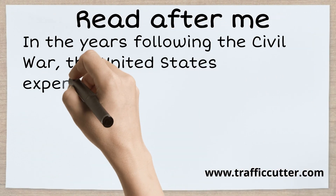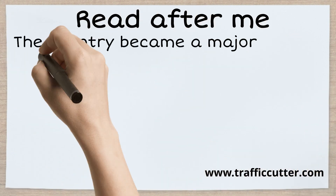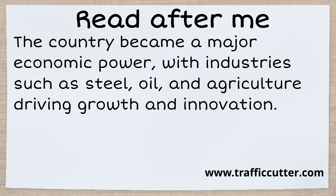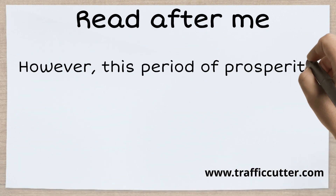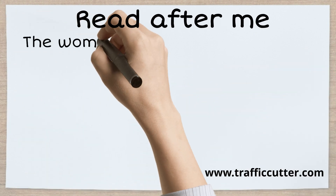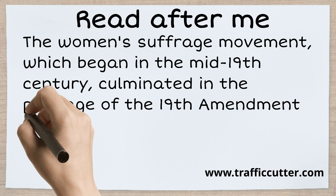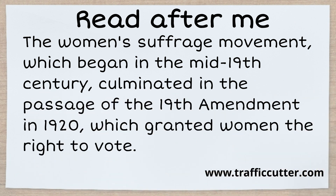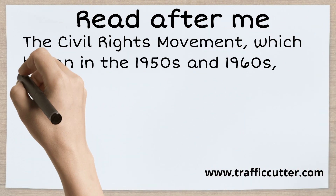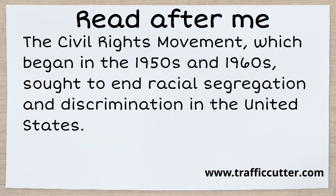In the years following the Civil War, the United States experienced rapid industrialization and urbanization. The country became a major economic power, with industries such as steel, oil, and agriculture driving growth and innovation. However, this period of prosperity was also marked by significant social and political upheaval. The women's suffrage movement, which began in the mid-19th century, culminated in the passage of the 19th Amendment in 1920, which granted women the right to vote. The civil rights movement, which began in the 1950s and 1960s, sought to end racial segregation and discrimination in the United States.